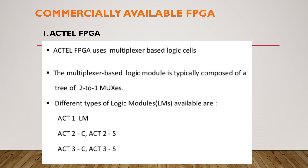We all know that in FPGA it contains three basic elements. One is programmable logic cell, the second one is programmable wire or interconnect, and the third one is called the IO block. In this actual FPGA it is based on a multiplexer — the programmable basic cell mainly depends on the multiplexer.